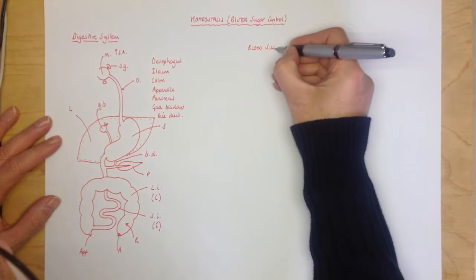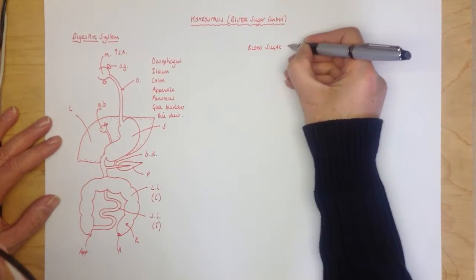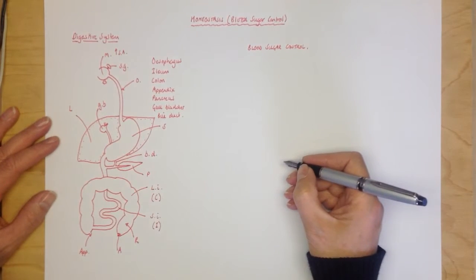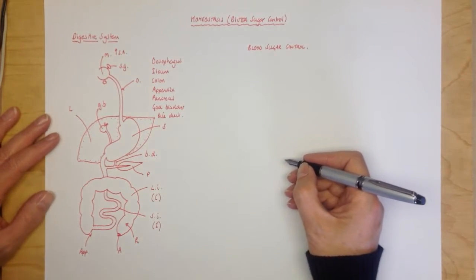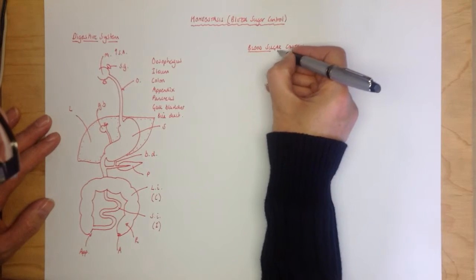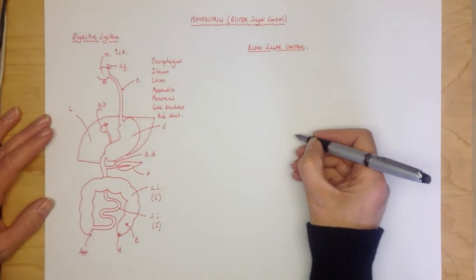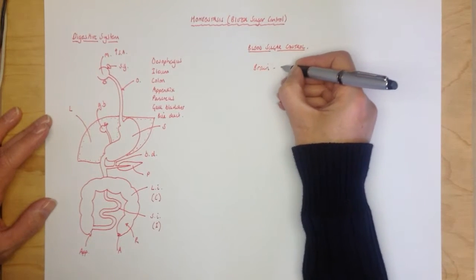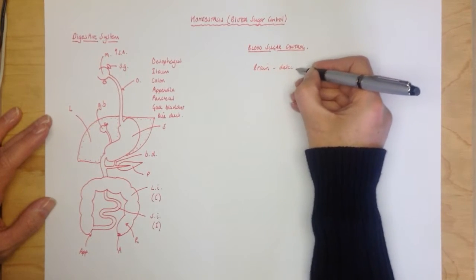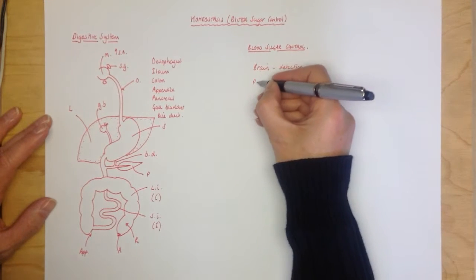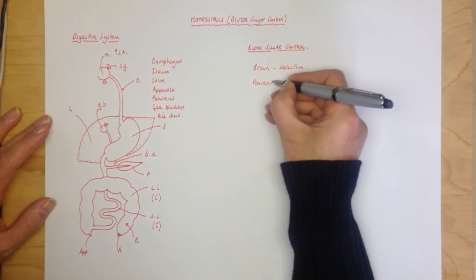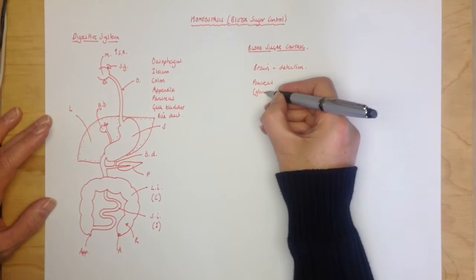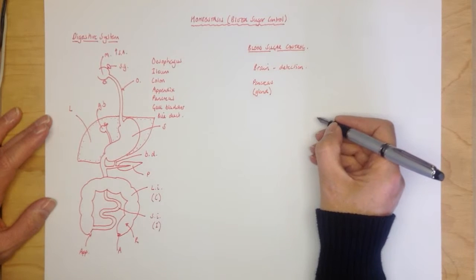Your blood sugar changes throughout the day because you use some of the sugar in respiration. But also when you eat a meal, your blood sugar levels increase and need to be brought back down. Your blood sugar levels are detected by the brain, and the brain tells the pancreas which hormone to release. The pancreas is a gland - that's anything that produces a hormone.